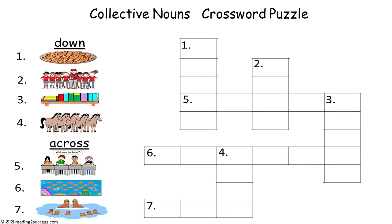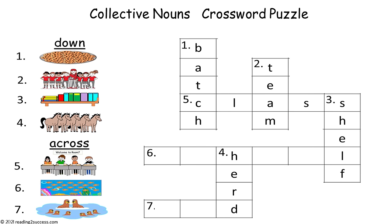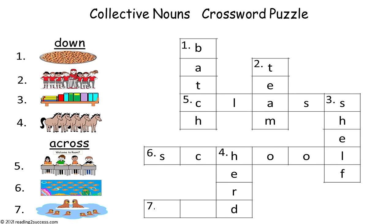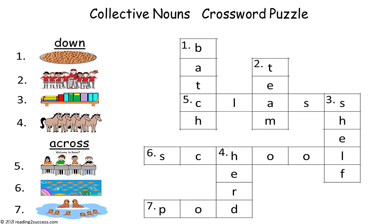Now we're going to have kids complete the collective nouns crossword puzzle. One down is batch. Two down is team. Three down is shelf. And four down is herd. Now going across: five across is class, six across is school, and seven across is pod.